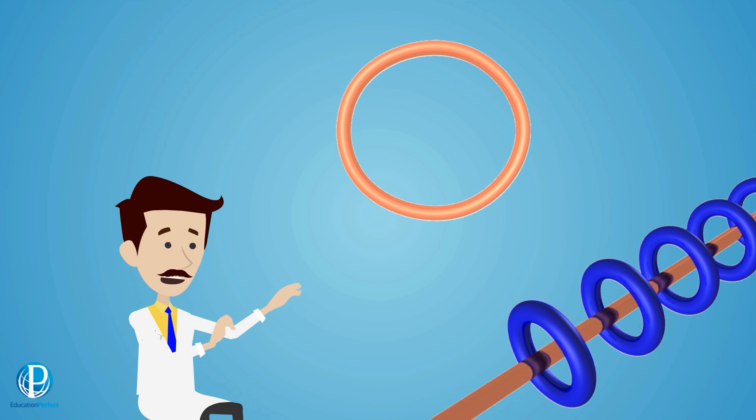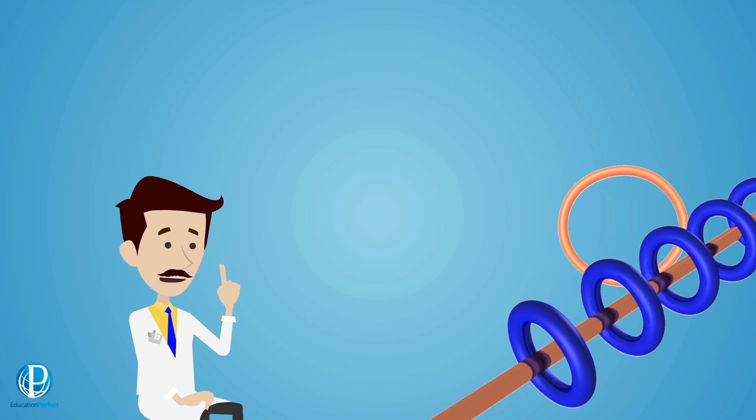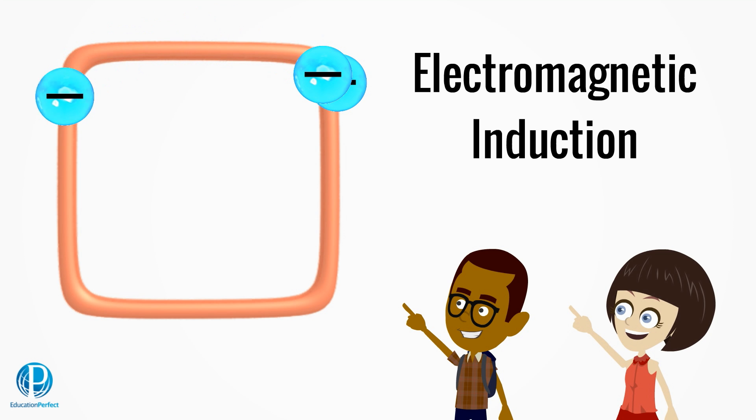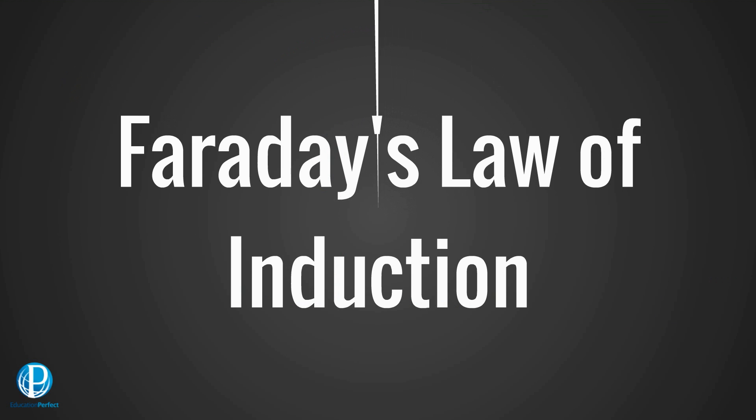This only happens when I stick the loop into the field or take it out. When it's completely inside the magnetic field or completely outside it, the flux does not change. This is induction, ladies and gentlemen. The manipulation of electricity through a changing magnetic flux. Today we call it Faraday's law.